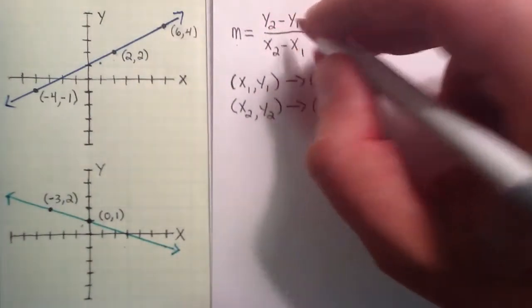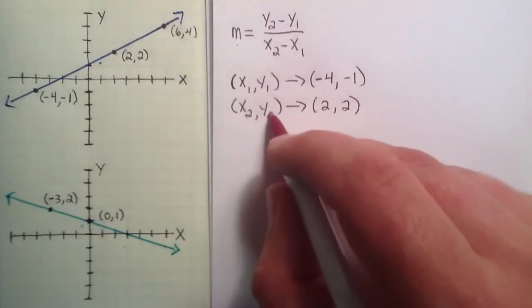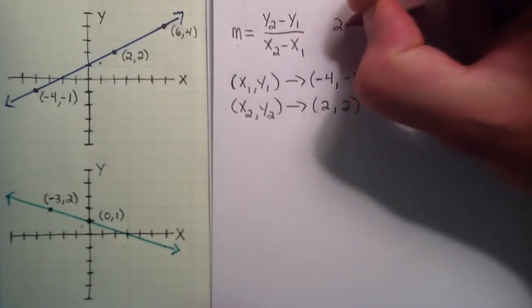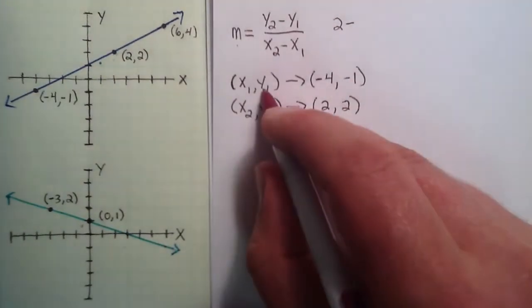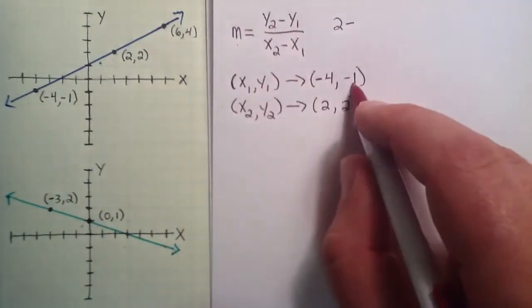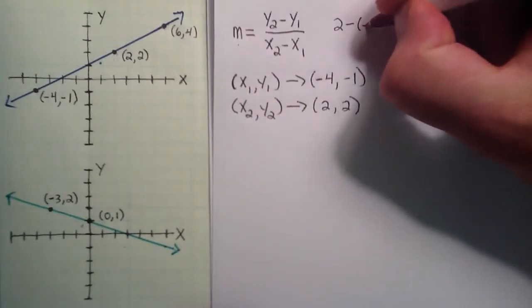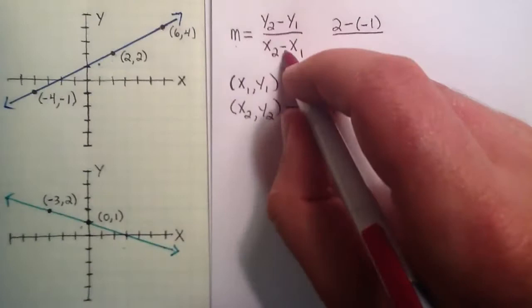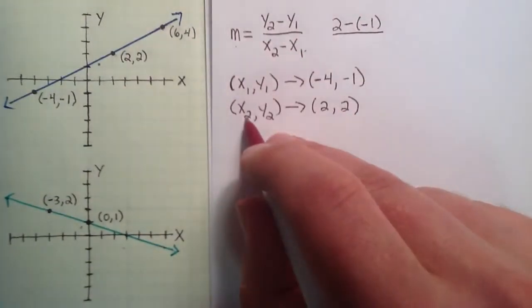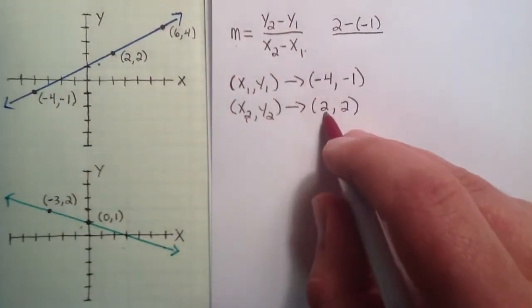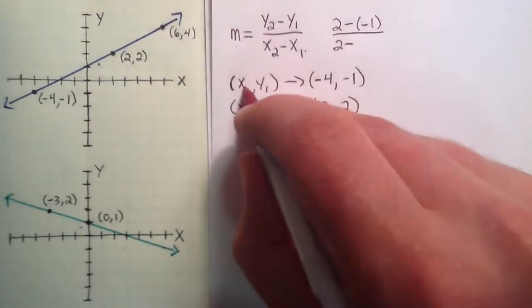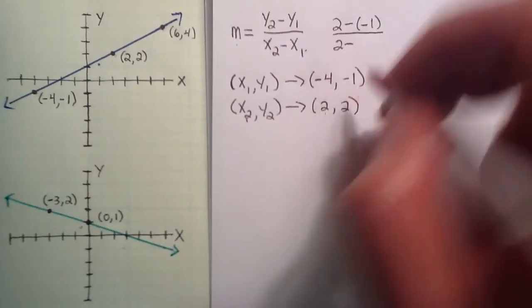So y2 minus y1. y2 is simply the right-hand side of this point, or simply 2. And y1 is the right-hand side of this point, or negative 1. And then we divide by x2 minus x1. x2 is the left-hand side of this point, or 2. And we subtract the left-hand side of this point, our x1, which is a negative 4.